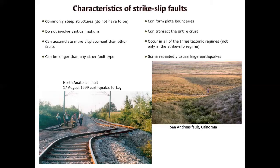Those partial melts can come along the strike-slip faults, so these very steep, almost vertical structures can serve as conduits to melt. Some magmatism can therefore be expected along strike-slip faults because of that.